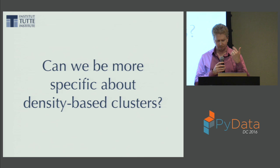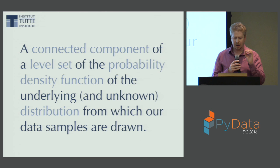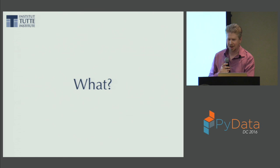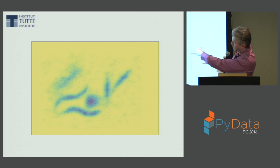Can we be more specific about density-based clustering? A cluster is a connected component of a level set of the probability density function of the underlying and unknown distribution from which our data samples are drawn. Let's build intuition: I can do kernel density estimation to estimate the PDF from which that data was drawn, giving a heat map where denser regions appear in bluer colors.